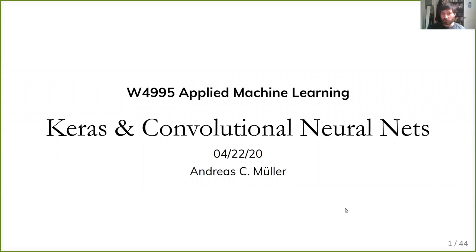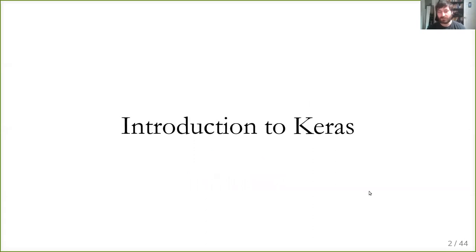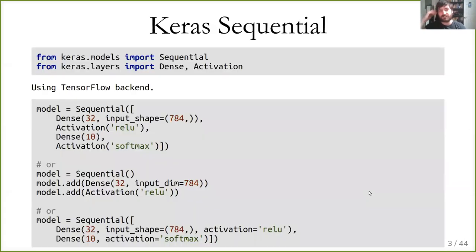Today we'll talk about Keras, which is one of the high-level libraries for doing deep neural networks. It's quite similar to TorchNN. And then we'll talk about a specific kind of neural network — convolutional neural networks — which are mostly used for image recognition, but also for video or audio data. We'll start with an introduction to the Keras sequential interface. Keras actually has several different interfaces, particularly the sequential and the functional, but we'll only focus on the sequential interface.